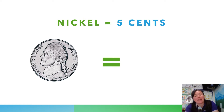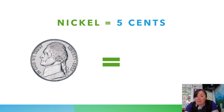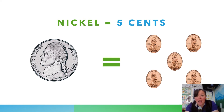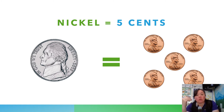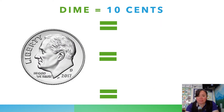A nickel is five cents, but we can also make five cents by using five pennies. So one nickel is equal, or equivalent, to five pennies.